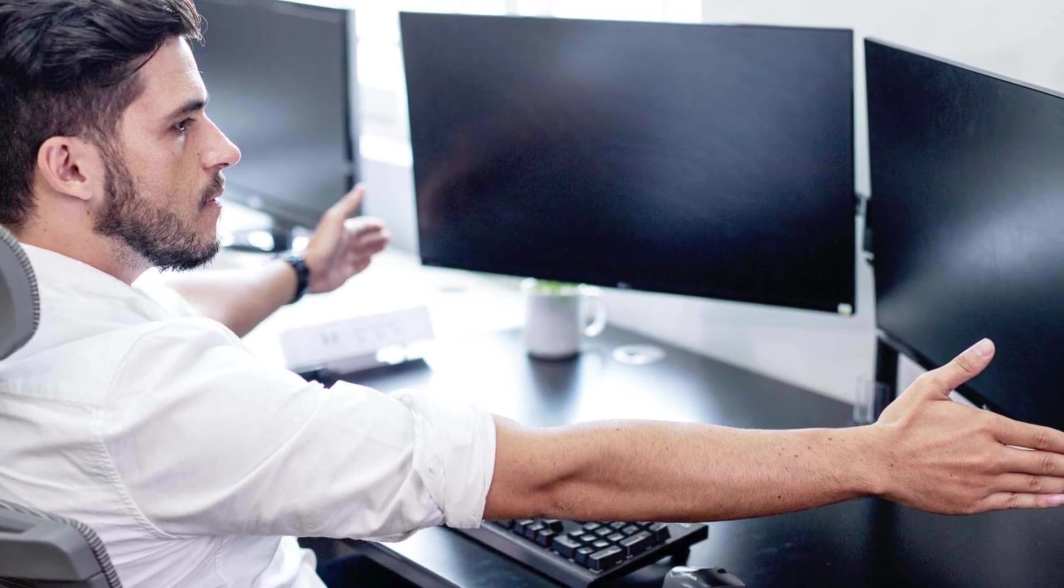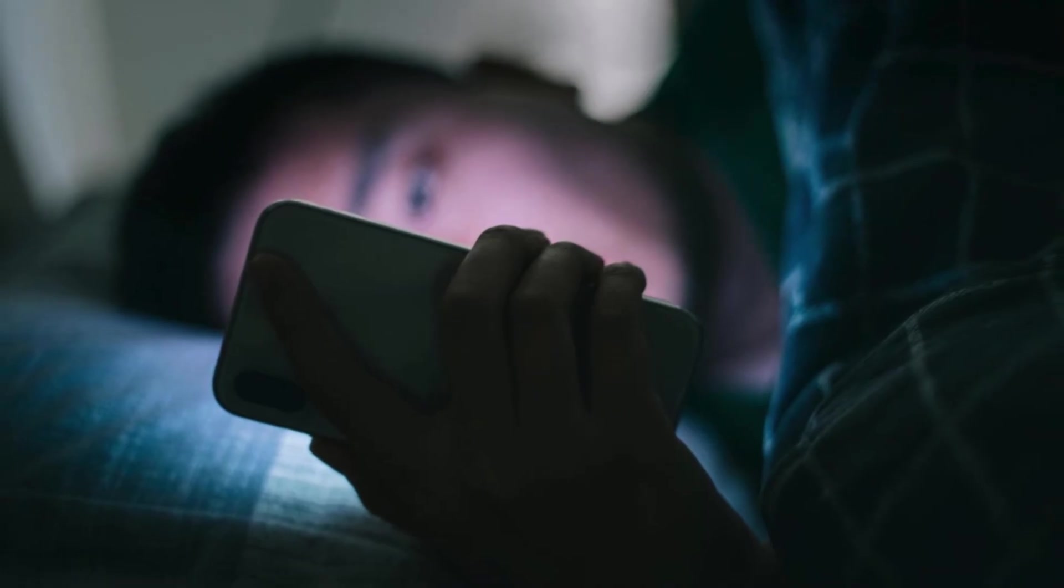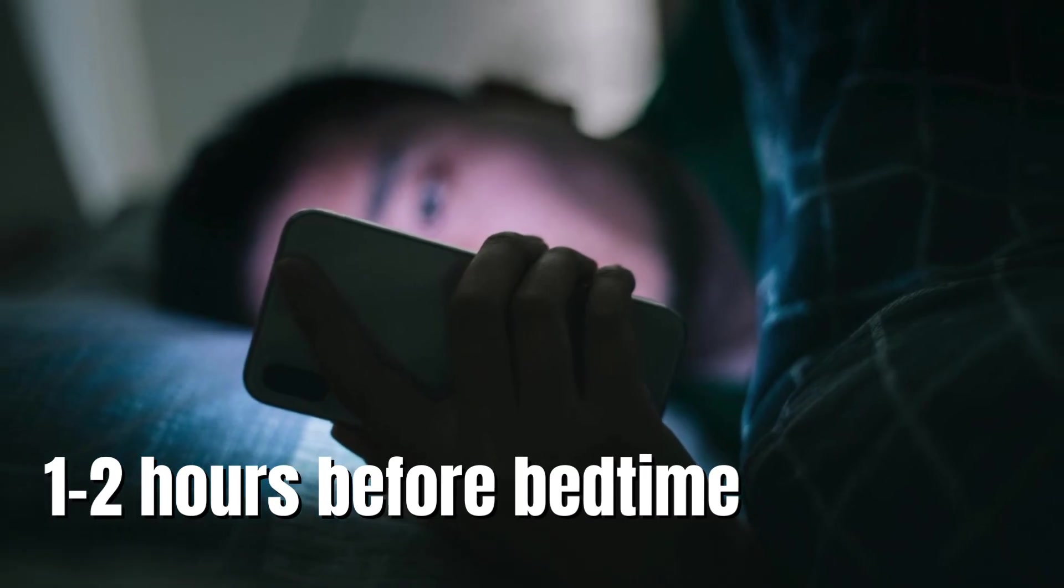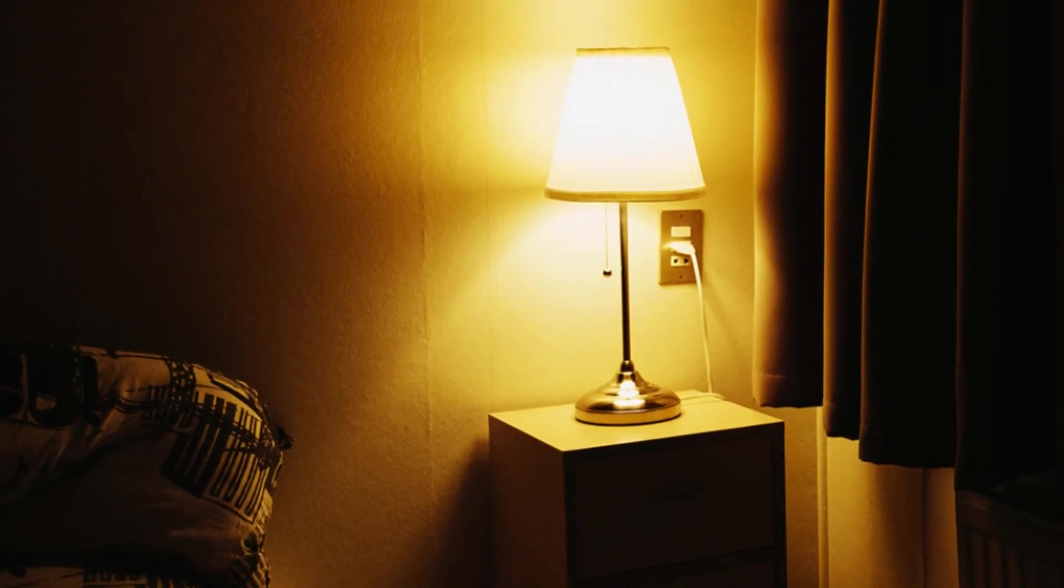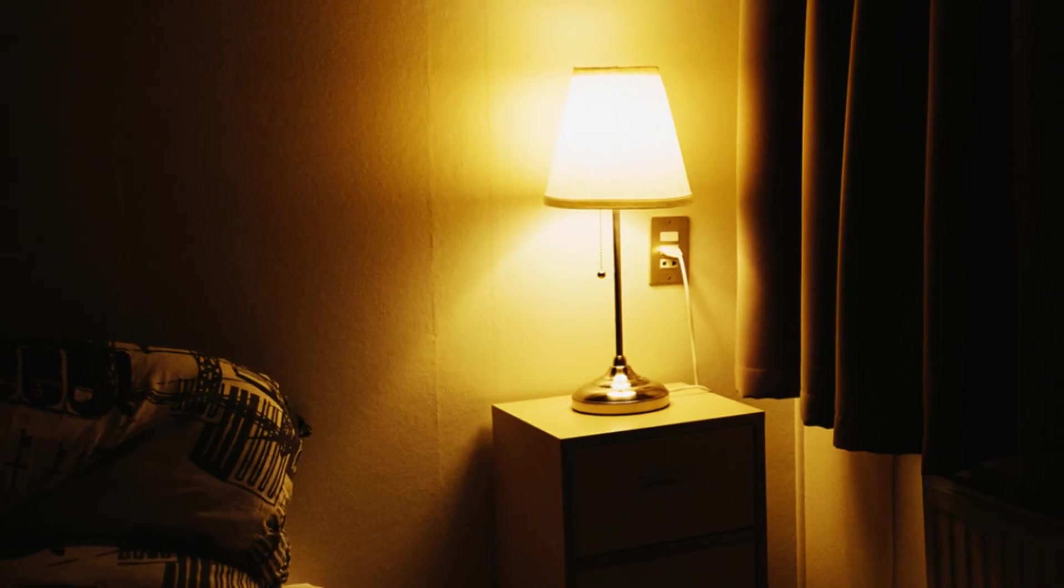Maintain a comfortable distance between your eyes and the screen, around an arm's length or at least 2 feet. Avoid screen time for at least 1-2 hours before bedtime to minimize blue light's impact on melatonin production. Wearing blue light-blocking glasses in the evening can minimize blue light exposure before bed. Dim the lights in your bedroom to create a sleep-conducive environment.